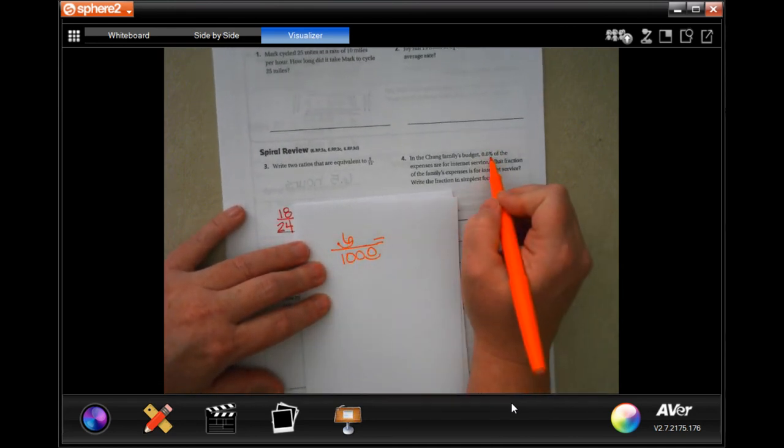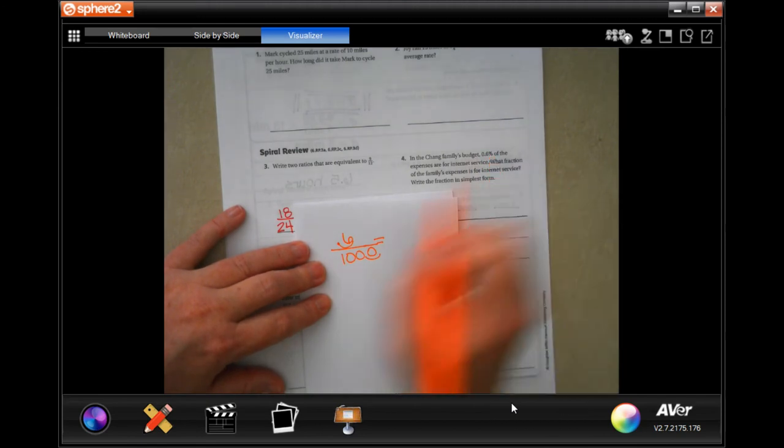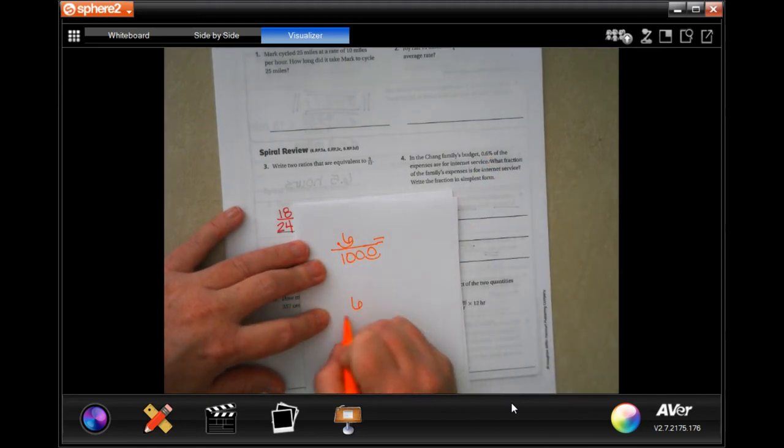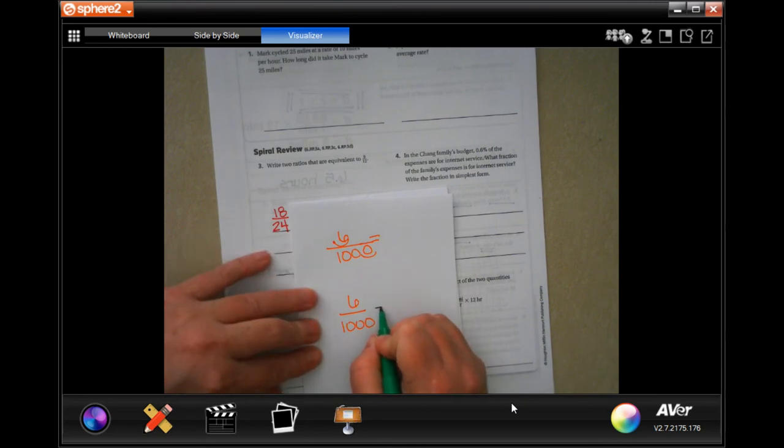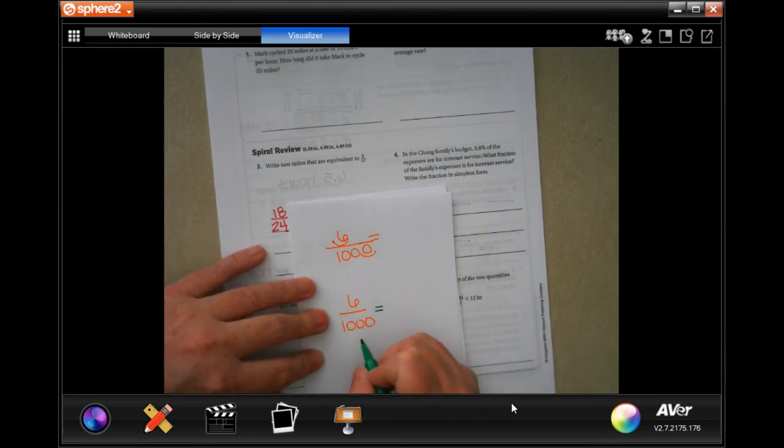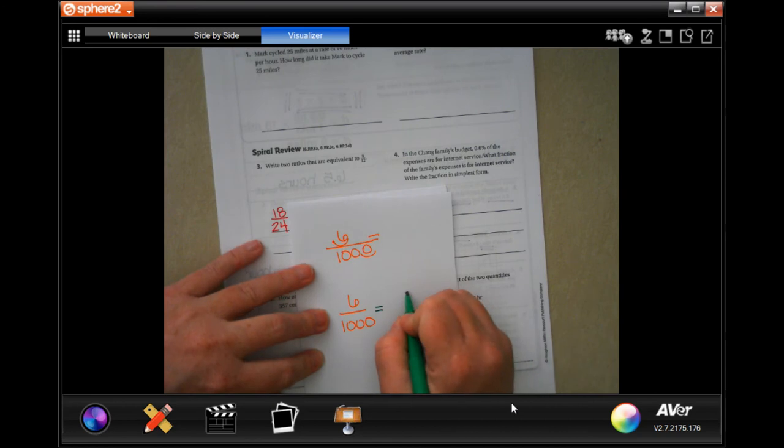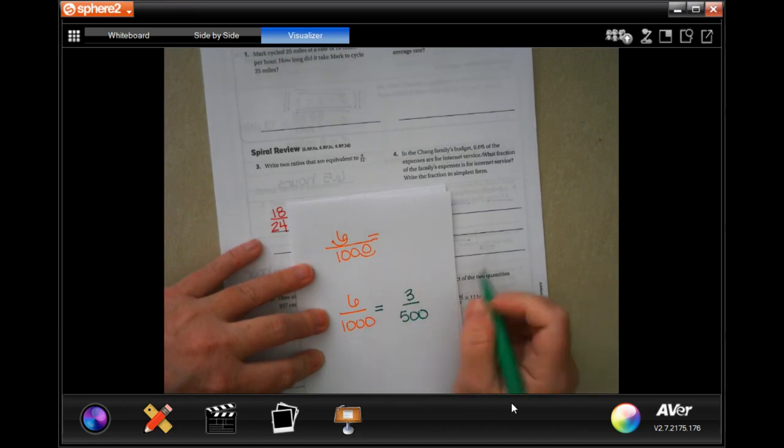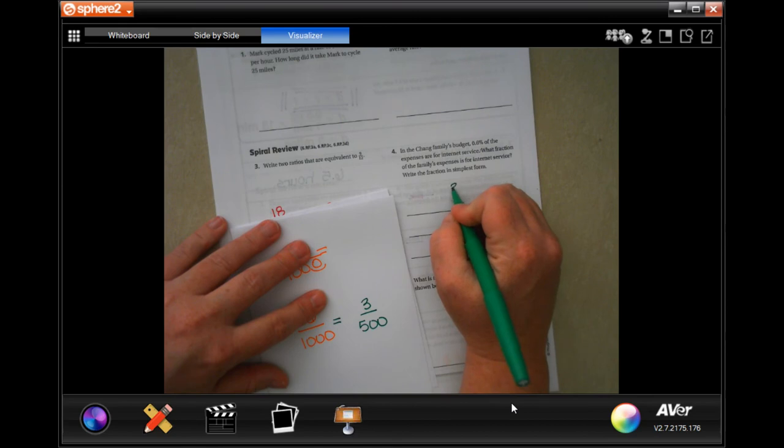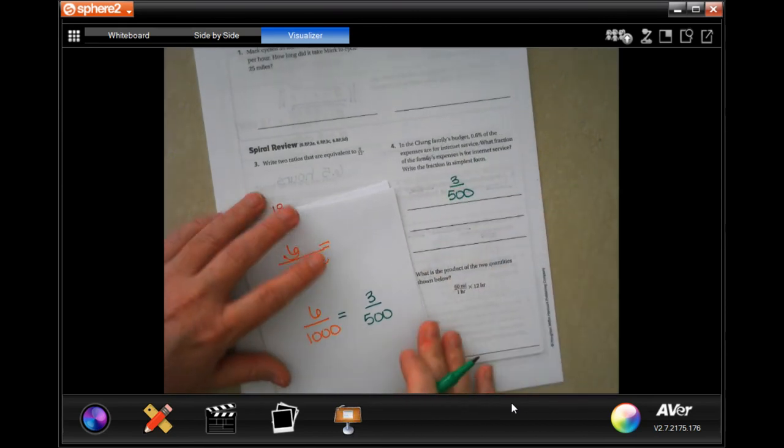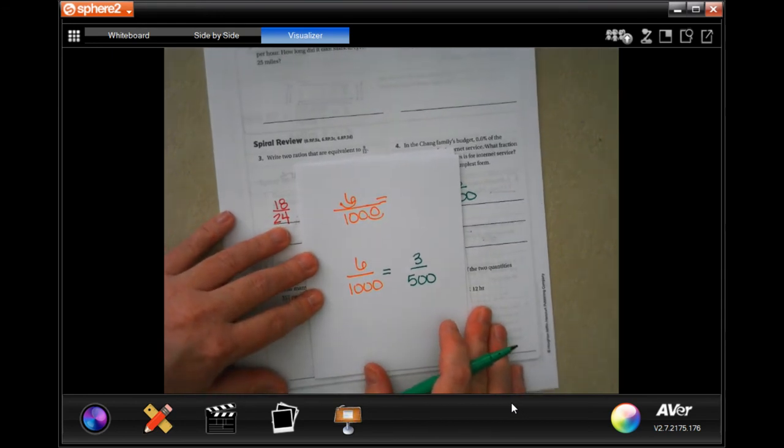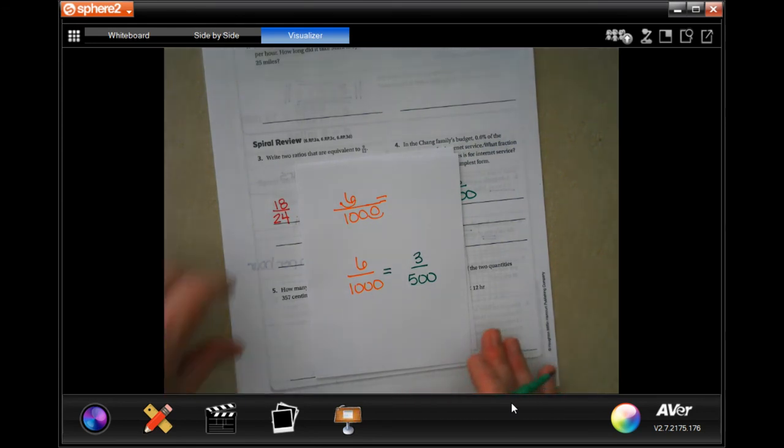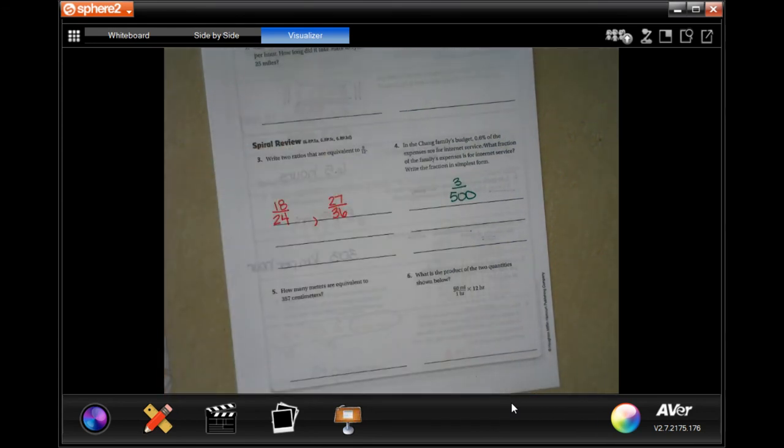So, the 6 is over 100 because it's percent. So, 6 over 1,000 is our percent, is our percent written as a fraction. Writing it in simplest form, well, both of those can be divided by 2, they're both even. So then I would have 3 over 500, that is our fraction. Looks a little funky, even to me. It is what it is.